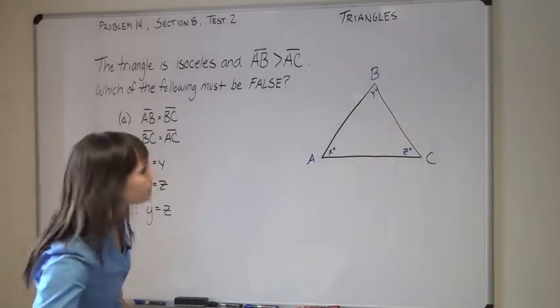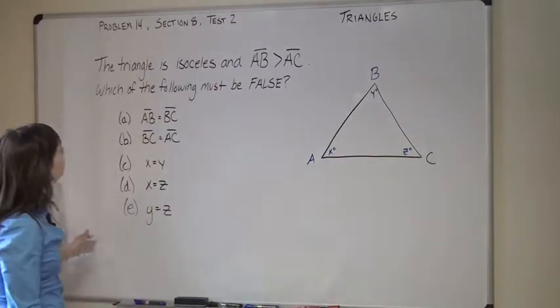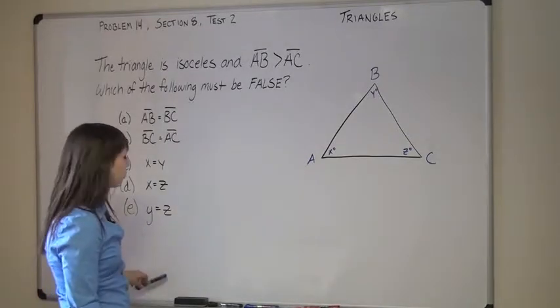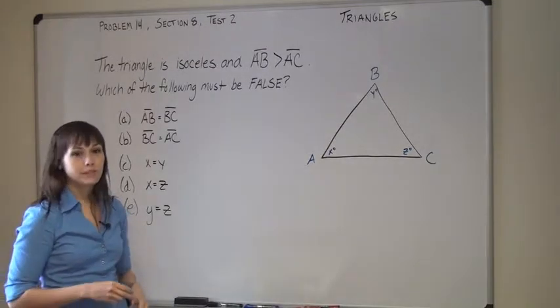This is a triangles problem. It gives you this labeled triangle and tells you that the triangle is isosceles and side AB is greater than side AC. Which of the following must be false?